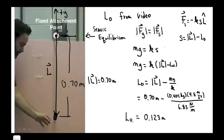Recall that in vector form the spring force is given by this expression where s is the difference between the stretched length and the relaxed length. Plugging this expression in and solving for the relaxed length L0 we have this result. Now we know all the quantities on the right hand side so plugging all this in we find that the relaxed length L0 is 0.123 meters.